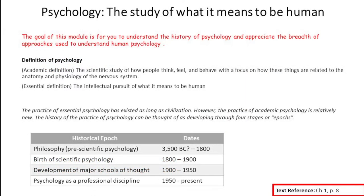Psychology — let's first define what psychology is. The goal is to understand the history of psychology and to appreciate the breadth of approaches that help us understand it. The academic definition of psychology is the scientific study of how people think, feel, and behave, with a focus on how these three things are related to the anatomy and physiology of your nervous system. Now let's break that down — there are three important parts to this definition.